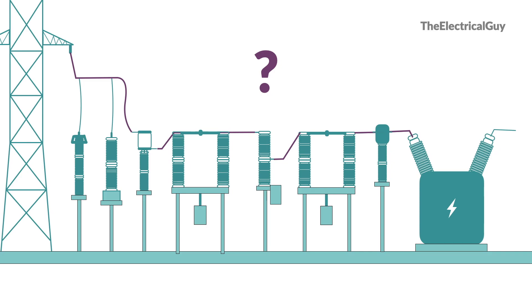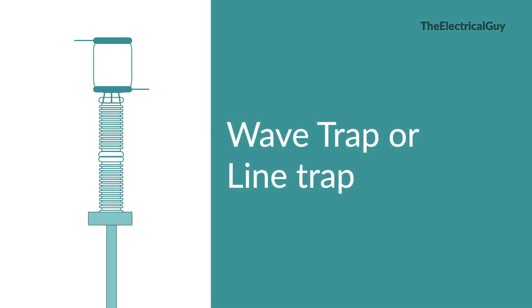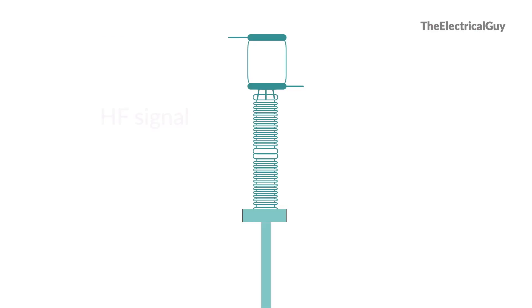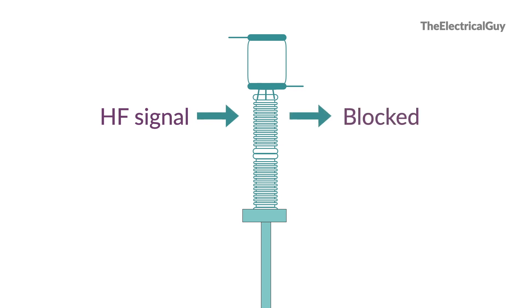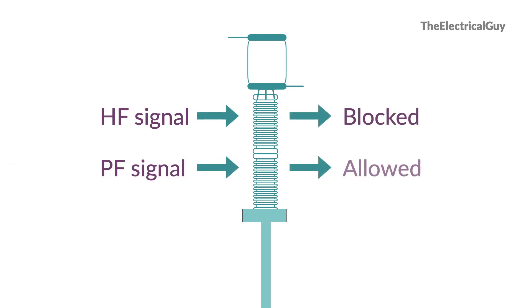And hence we must avoid these high frequency signals entering other substation equipment. That's when line trap or wave trap comes into picture. The function of a wave trap or line trap is to block high frequency communication signals going into the substation and only allow power frequency signal or current.